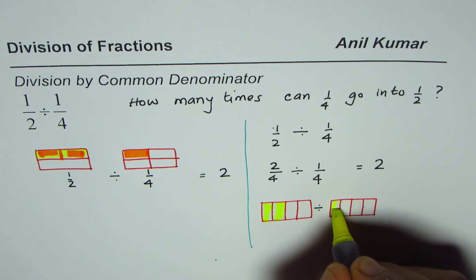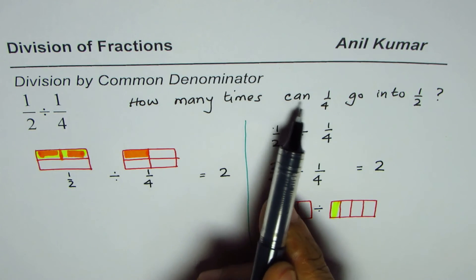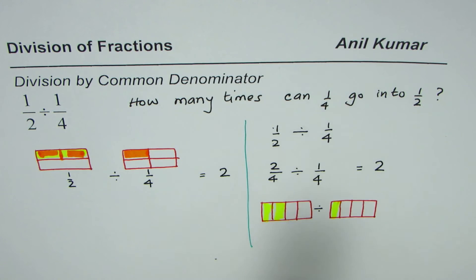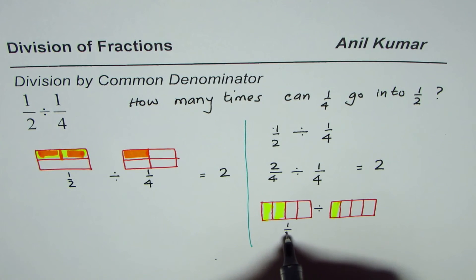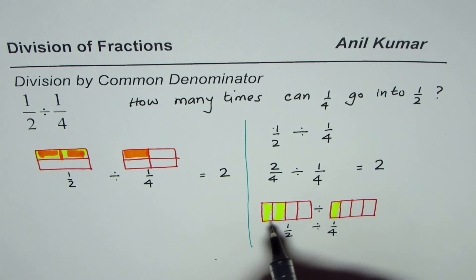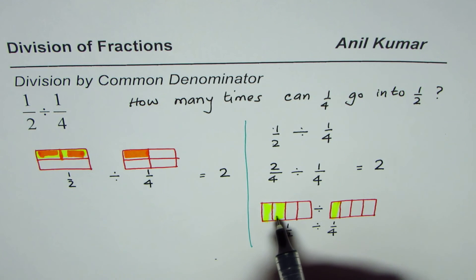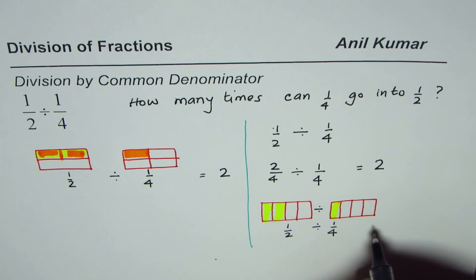Now it is very simple to visualize: how many times can one-fourth go into half? This is half for us, divided by one-fourth. That is one column, and here we have two columns. How many times will this one column go into these two? Two times. Therefore, the result is two.